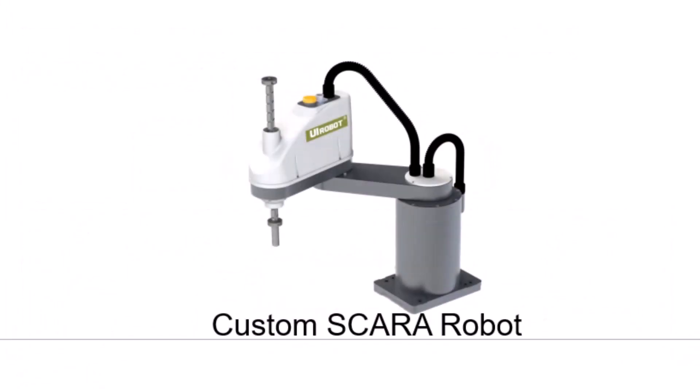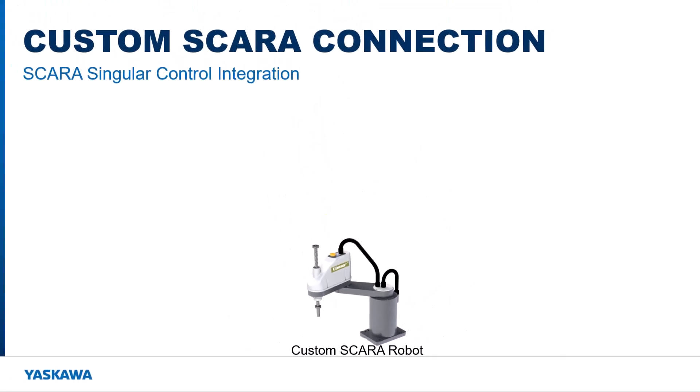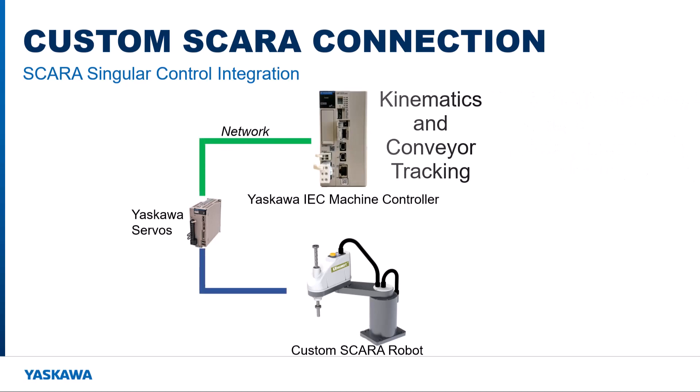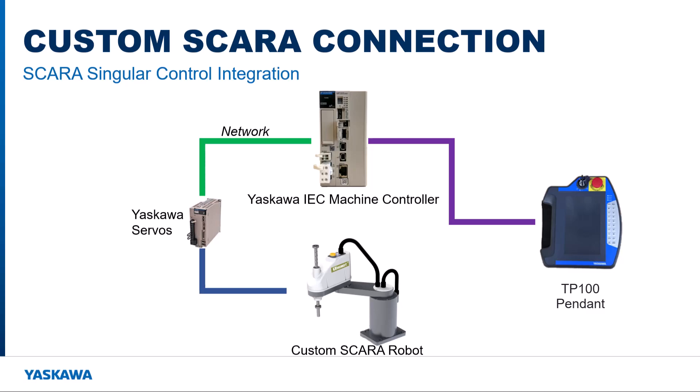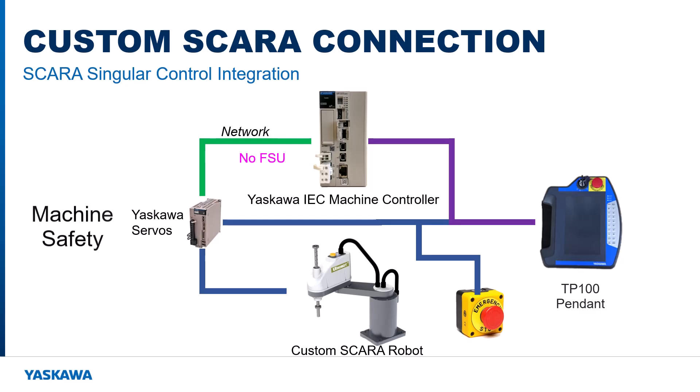These mechanisms can include custom SCARA robots. With custom SCARAs, the robot axes and inverse kinematics are commanded directly by the machine controller over the motion network. The optional pendant communicates data to the machine controller, with safety switches wired directly to the servos of the robot. Machine safety can be implemented at the servo level, but note that robot functional safety is not currently possible with custom SCARA or any other mechanism controlled this way.